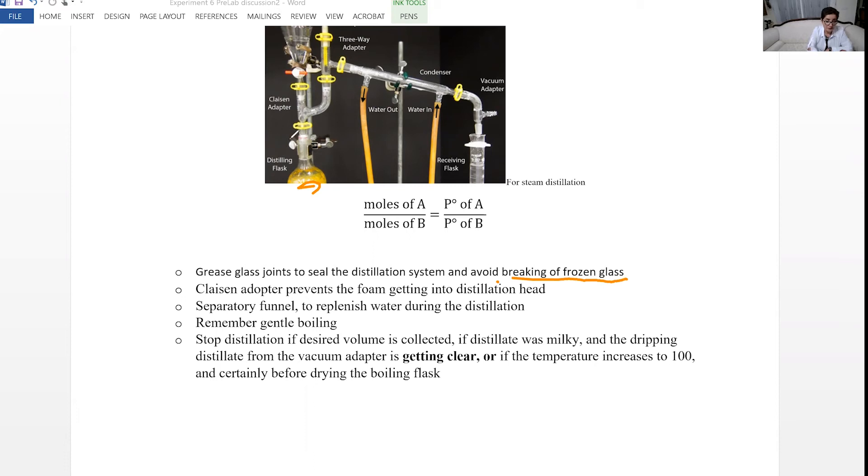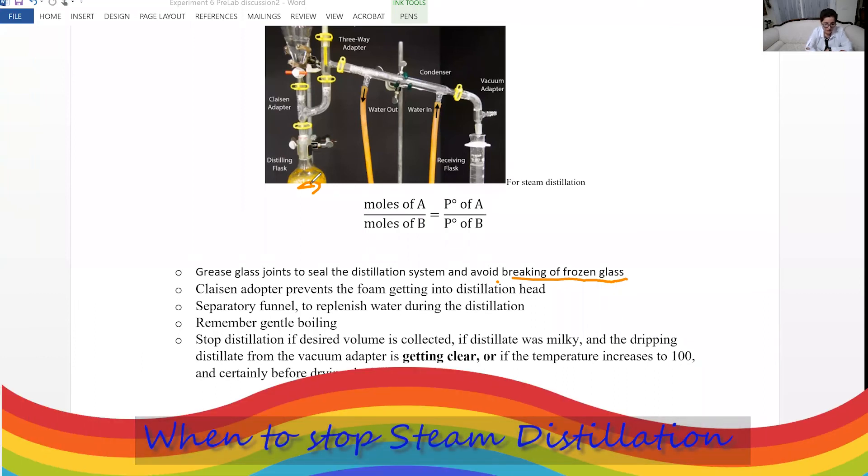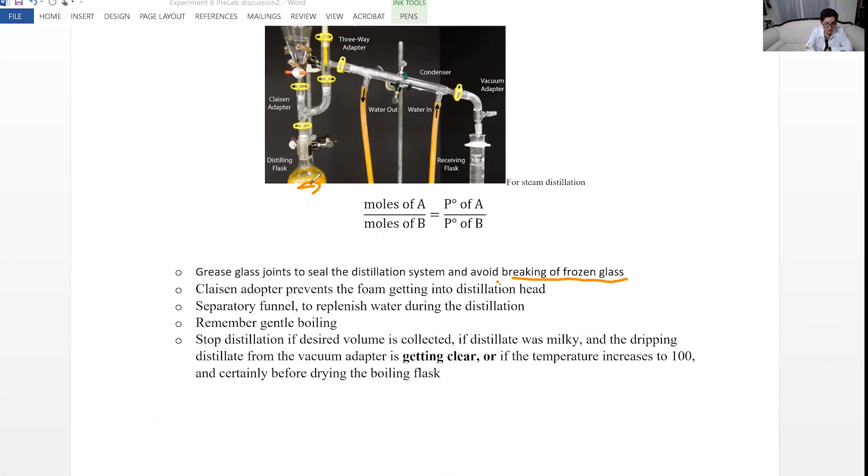If the water in the separatory funnel is finished and this is drying out, stop the heat right away. What does stopping heat mean? You turn off the power regulator, lower the heating mantle, remove the heating mantle right away. Because heating mantle is hot, just turning off the power regulator doesn't stop the heat. So you have to remove the heating mantle.